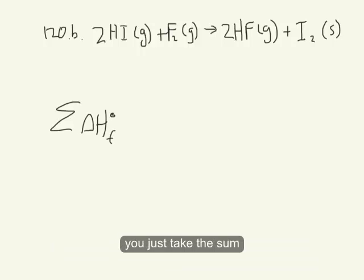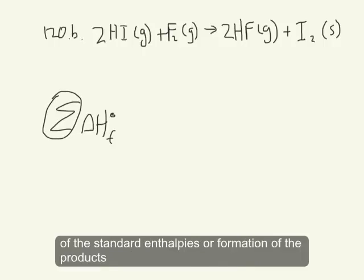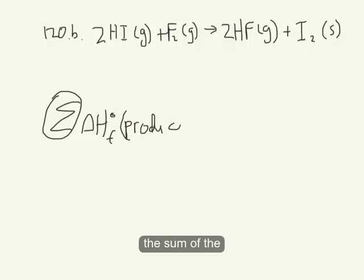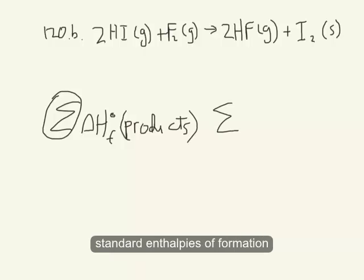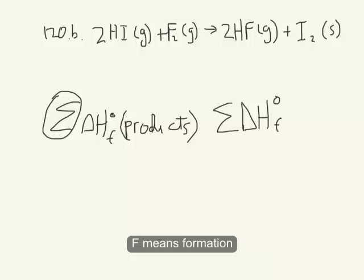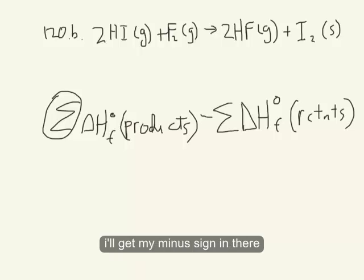You just take the sum of the standard enthalpies of formation of the products minus the sum of the standard enthalpies of formation. F means formation of the reactants. Get my minus sign in there.